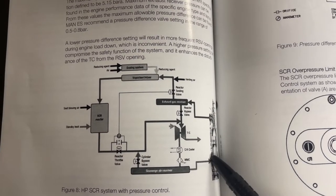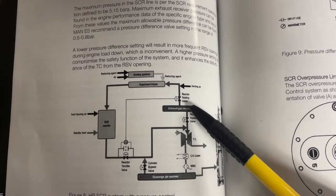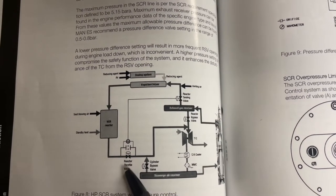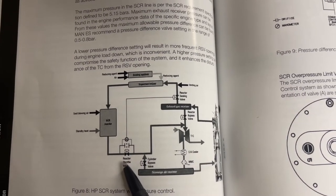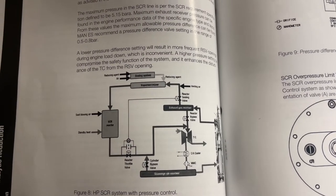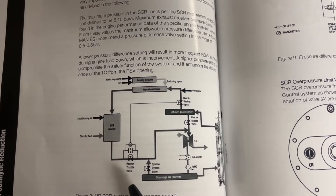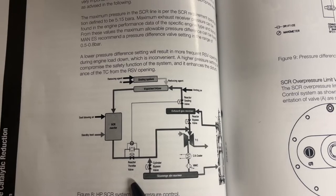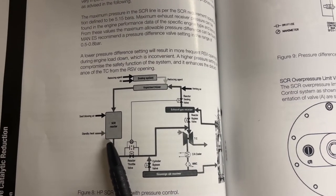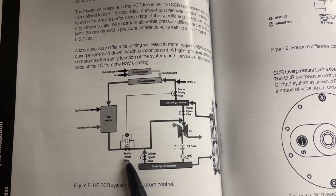When the engine is running and you start the SCR, the RSV (reactor sealing valve) opens. The RTV starts to open slowly to heat up the SCR reactor. At the same time, the RTV ensures that sufficient exhaust energy is available to the turbocharger. Once the reactor is heated up fully and temperature becomes sufficient, the RTV opens fully.